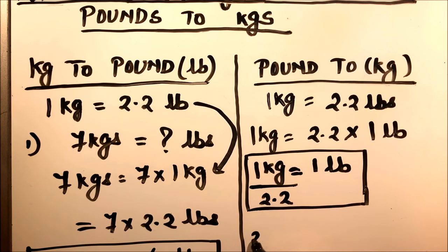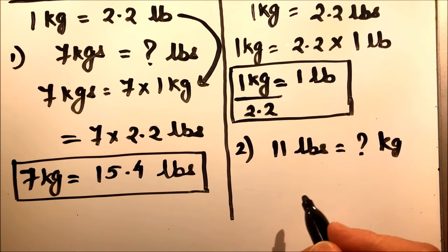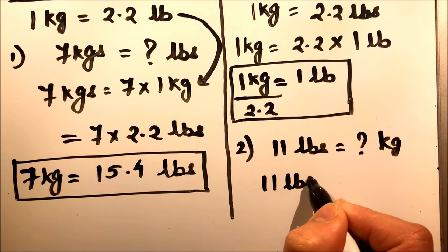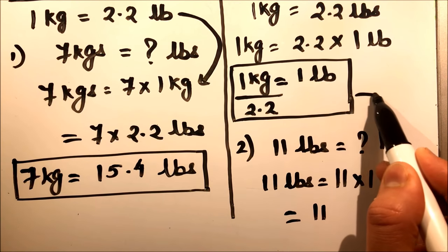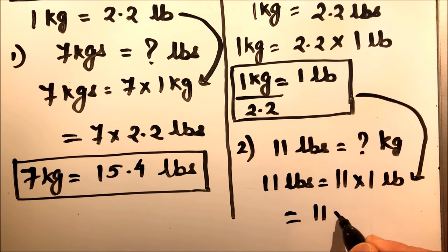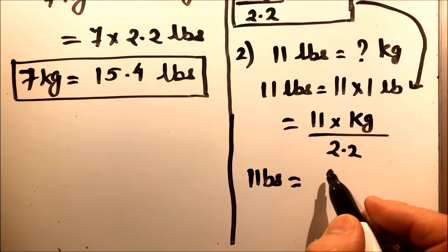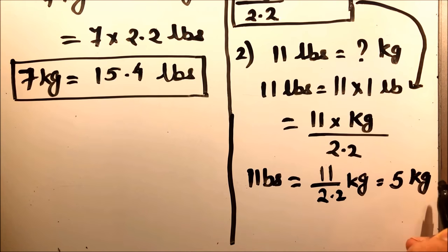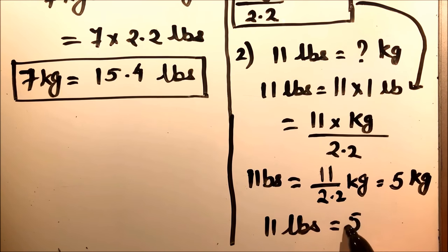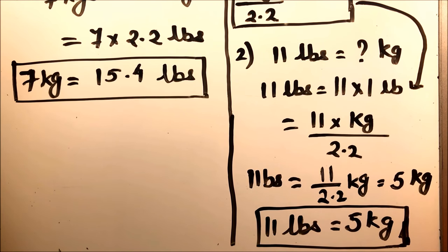Suppose you need to convert 11 pounds to kilograms. We can write 11 pounds as 11 times 1 pound, and in place of 1 pound we write 1 over 2.2 kilograms. So 11 pounds will be equal to 11 over 2.2 kilograms, which is equal to 5 kilograms. So 11 pounds is equal to 5 kilograms. This is how we convert pounds to kilograms by dividing by 2.2.